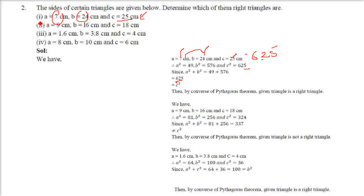Again we take sides 9, 16, 18. We check 9 square plus 16 square — whether it equals 18 square. It is not, because 9 squared plus 16 squared gives 337, while 18 squared is 324. So it is not a right angled triangle.